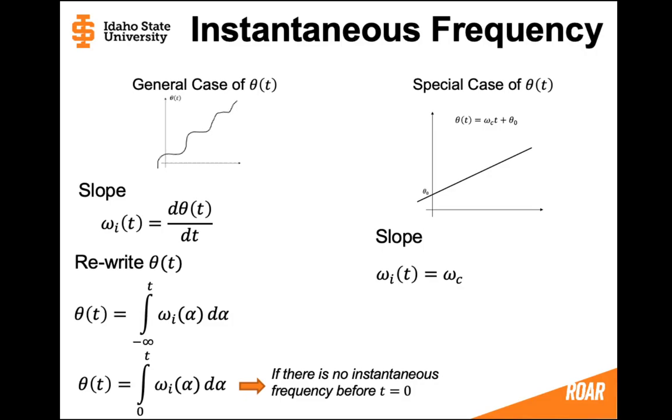Now if we have some instantaneous frequency and we don't have any information before time zero, we could just integrate from zero to t still using that same variable alpha.